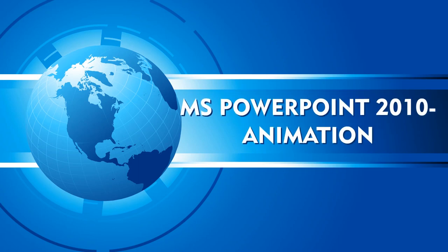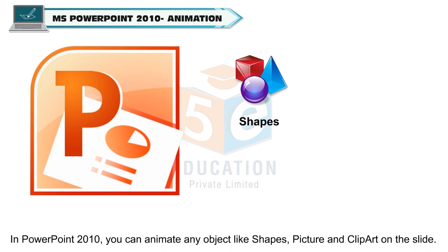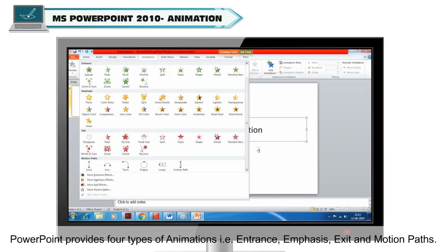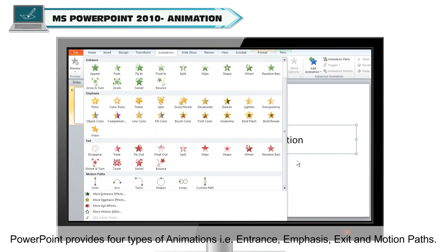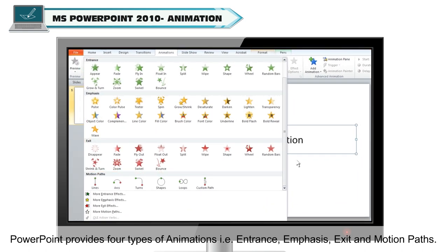MS PowerPoint 2010 Animation. In PowerPoint 2010, you can animate any object like shapes, pictures, and clip art on the slide. PowerPoint provides four types of animations: entrance, emphasis, exit, and motion paths.